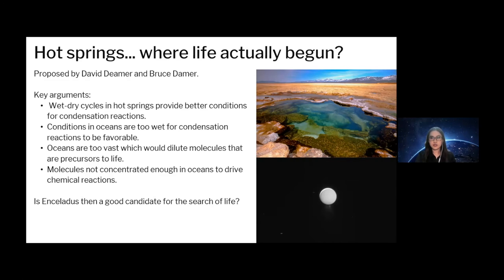If this hypothesis turns out to be true on Earth, will Enceladus then be ruled out as a good candidate for life detection? Icy moons may also promote condensation reactions — the freezing and thawing of ice may produce wet-dry cycles for life. Even so, we should look for any environment in the solar system that might promote these conditions of dehydration. I think Enceladus and other icy moons in our solar system should not be ruled out just yet.